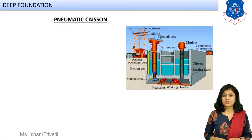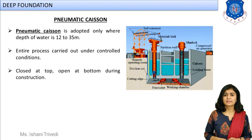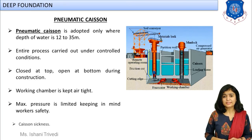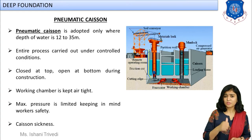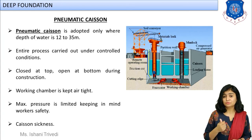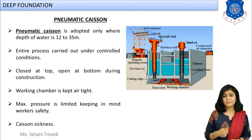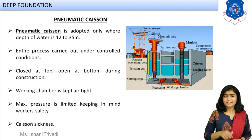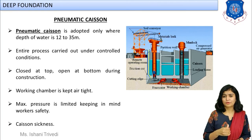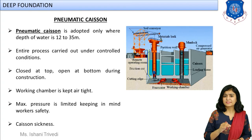Now let us discuss the third type — the pneumatic caisson. When dealing with a heavy depth of water ranging from 12 meters to 35 meters, it is not possible to send divers for dredging work, and mechanical equipment also cannot be used. In such cases, we use a pneumatic caisson. The pneumatic caisson is closed at the top and open at the bottom. Cutting edges are also fitted at the bottom to facilitate driving into the seabed.